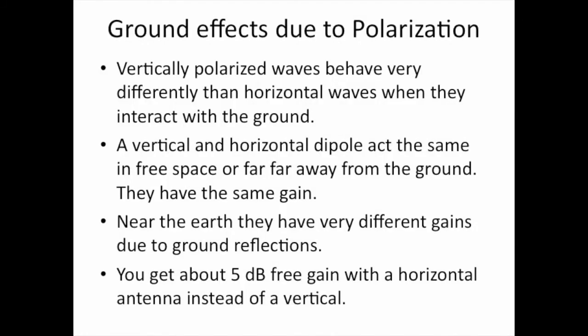Due to polarization, vertically polarized waves behave very differently than horizontal waves when they interact with the ground. A vertical and horizontal dipole act the same in free space — they have the same gain — but near the earth they have very different gains due to ground reflections. You get about 5 dB of free gain with a horizontal antenna over real ground. You do not get that 5 dB of free gain with a vertical antenna mounted near the ground.